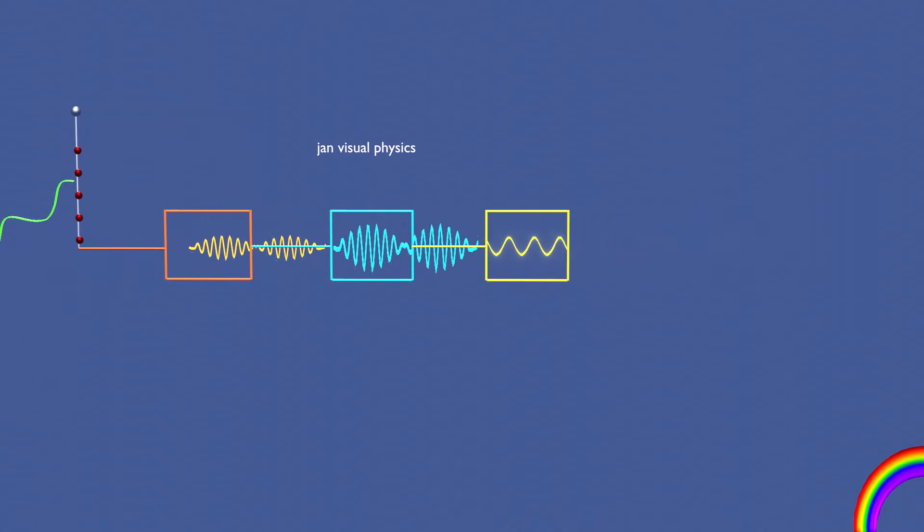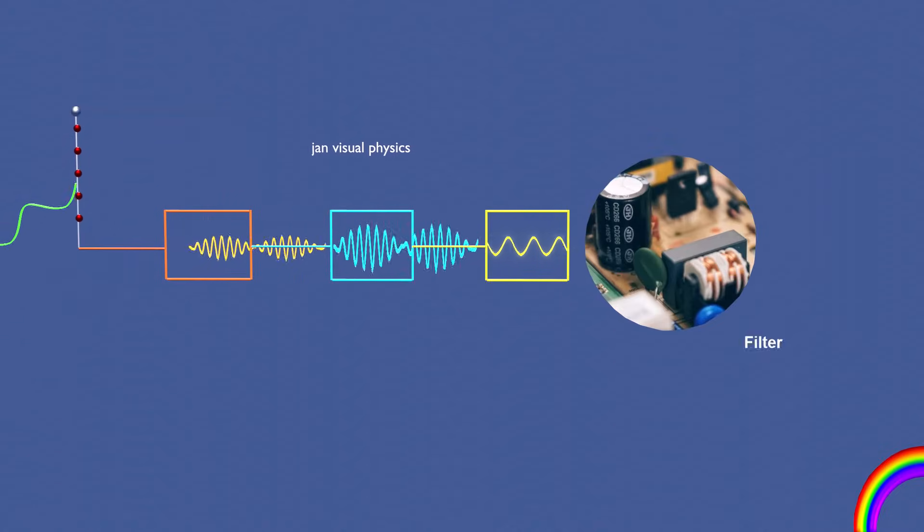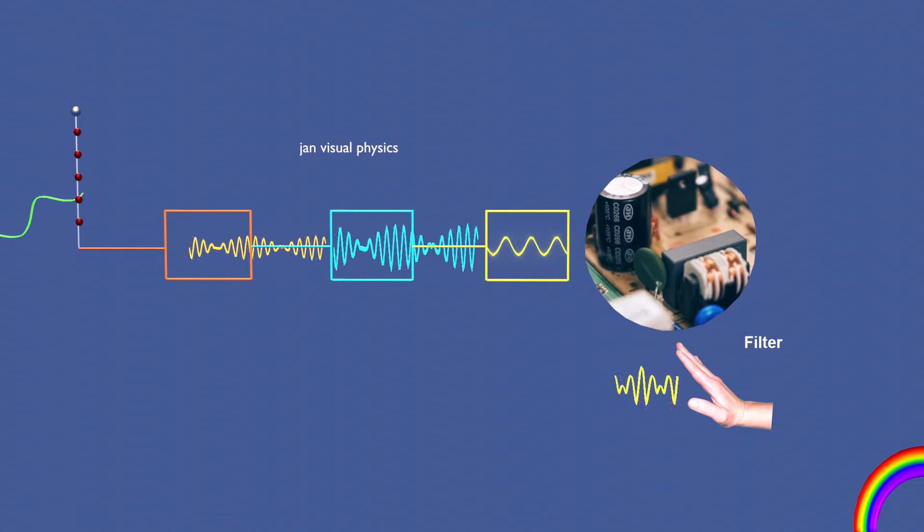To ensure clarity, the receiver employs filter circuits that remove unwanted frequencies and electrical noise. These functions are discussed in detail in separate videos.